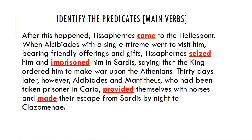You should have come up with these five verbs: 'Tissaphernes came' is the main verb of the first sentence; 'Tissaphernes seized and imprisoned' gives you the main verbs of the second sentence; 'Alcibiades and Menithius provided and made' are the main verbs of the third sentence. So that's what a main verb is.